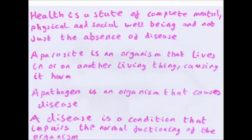Definitions: Health is a state of complete mental, physical and social well-being and not just the absence of disease. A parasite is an organism that lives in or on another living thing causing it harm. A pathogen is an organism that causes disease, and a disease is a condition that impairs the normal functioning of the organism. It can also be the departure from good health caused by the malfunction of the mind or body — both are acceptable definitions.